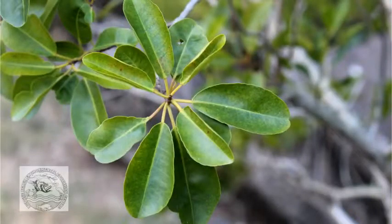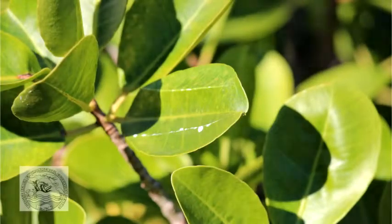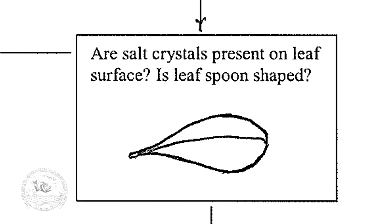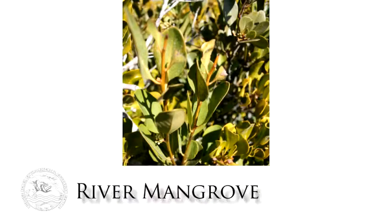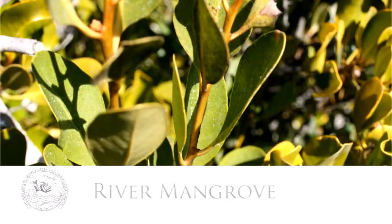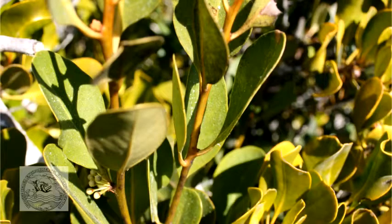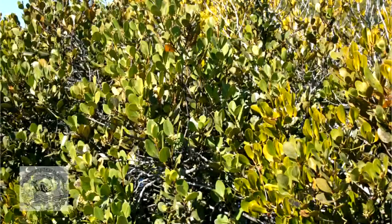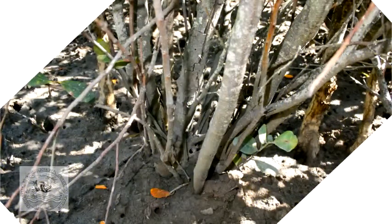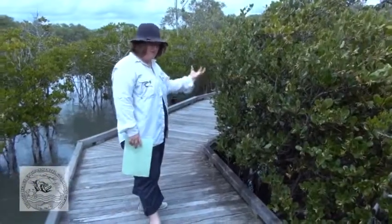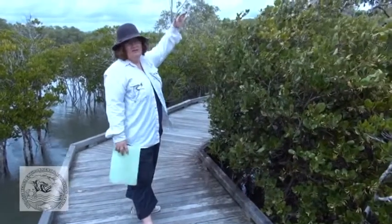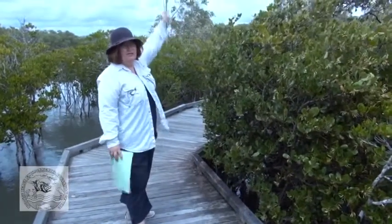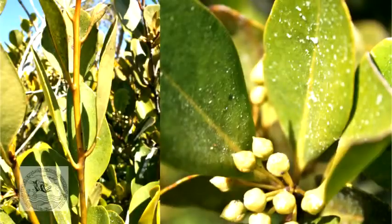If you look at the leaf and the sap is not there, then you ask the second question: are there salt crystals present on the top of the leaf surface? If so, you have a river mangrove. This leaf has a spoon shape and the river mangroves are shrubs or small-trunked trees. They are quite small in comparison to most of the other trees in the forest. This tree grows along the edges of creek banks and rivers — hence its common name, the river mangrove.